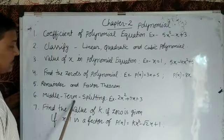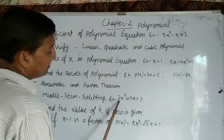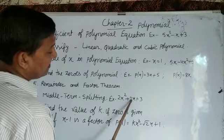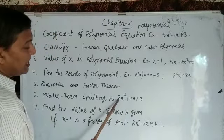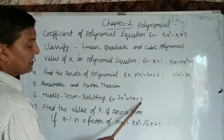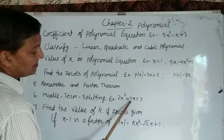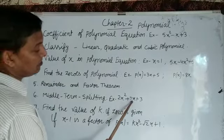Sixth concept is middle term splitting. For example, 2x² + 7x + 3. By multiplying 2 into 3, we get 6. Then factor this as 7 = 6 + 1.